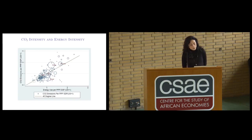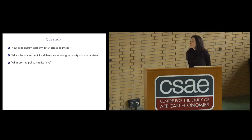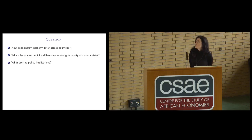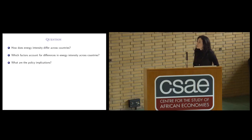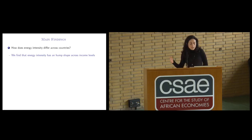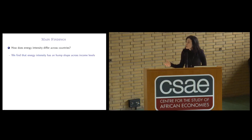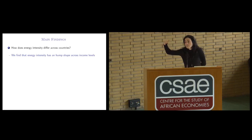This paper wants to answer three questions: first, how does energy intensity differ across countries by level of development; second, which factors account for differences in energy intensity observed in the data — is it due to differences in the structure of the economy, differences in prices, or differences in the productivity of energy; and third, we will touch on policy implications. We find that energy intensity has a hump shape: countries with very low development use little energy; as they develop more, energy use increases; and very developed countries use less energy to produce the same output.